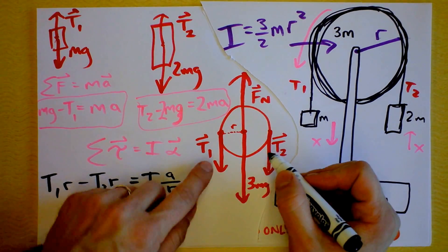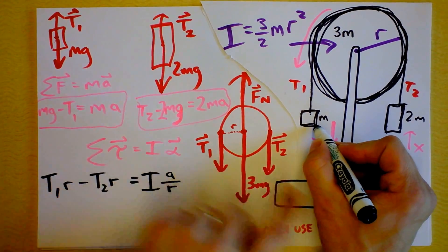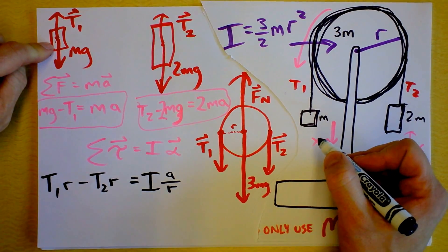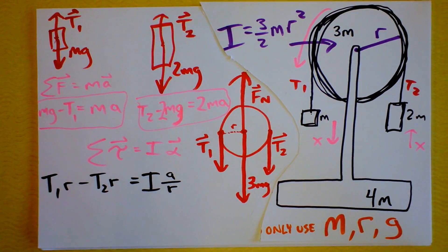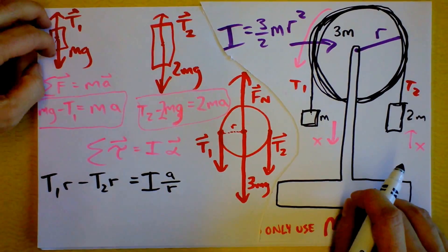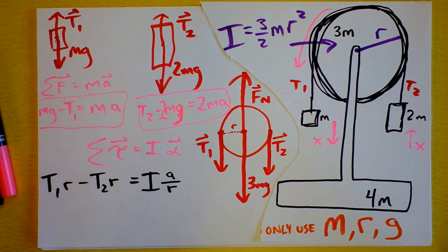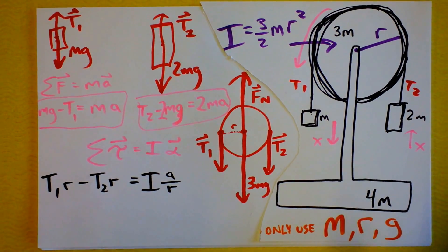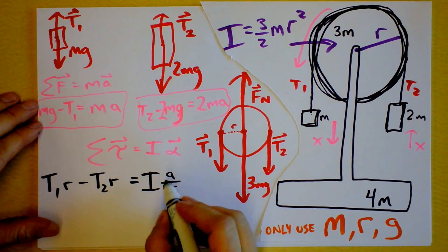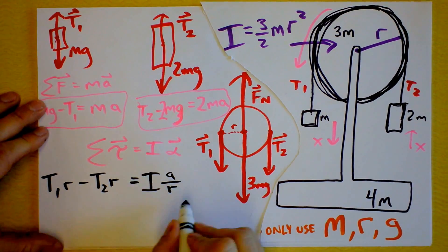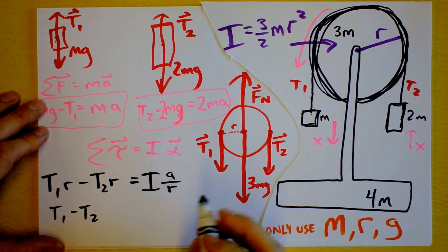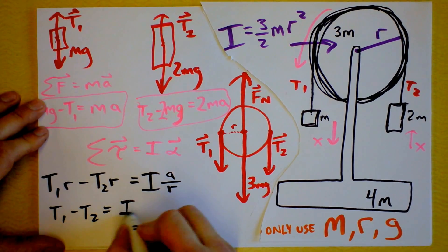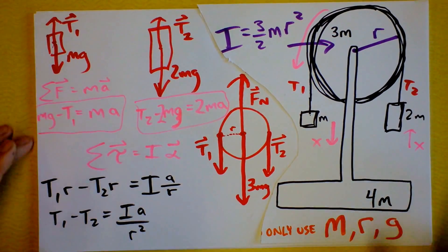A huge mistake my students made when they did this problem is they said these forces weren't tensions — they said they were equal to Mg and 2Mg. Think about that for a moment. If you know that this tension is equal to Mg, it's like you've already said this mass is not accelerating. Well, if the mass is not accelerating, why are you doing the problem? If it's in equilibrium, just write down acceleration equals zero and call it a day. We can't do that because it's a hard problem — we've got three variables. So I'm going to call this T1 and T2 on the pulley diagram.